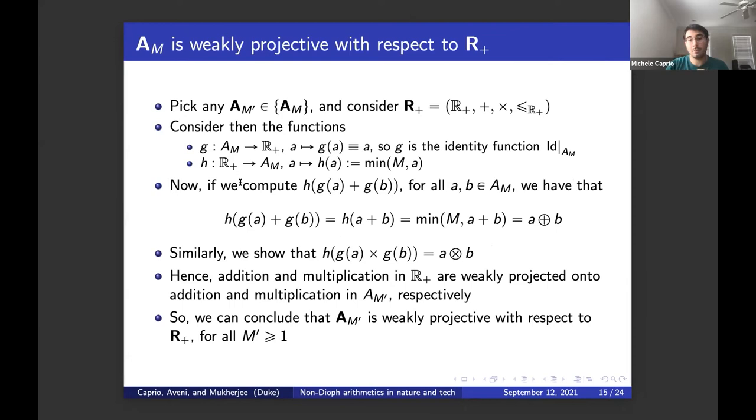The other two very interesting properties we're going to present in the next two slides. The first one is that A_M is weakly projected with respect to the Diophantine arithmetic of the positive reals. To see this, we just need to find two functions. In particular, the projector is going to be the identity function restricted on A_M. And the co-projector is going to be a simple function that is the minimum between the argument of the function and the M we are working with. If we compute H of G(A) plus G(B), we end up having A O plus B, and the same thing holds for the product. By this, we can see that addition and multiplication in R+ are weakly projected into addition and multiplication in A_M.